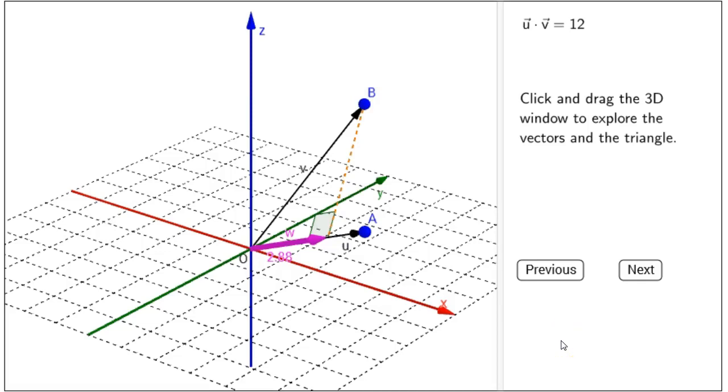This is the interactive figure, the dot product projections. In this interactive figure, we will see what it means to project one vector onto another and how the dot product relates to projecting vectors.